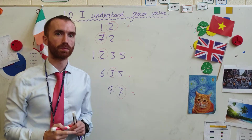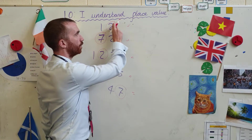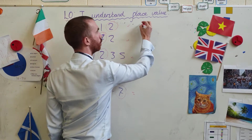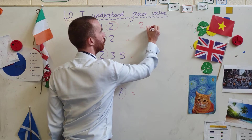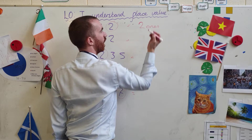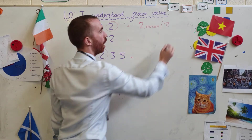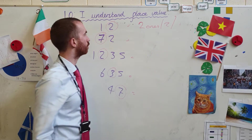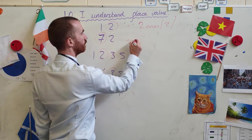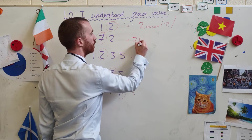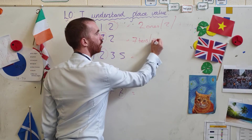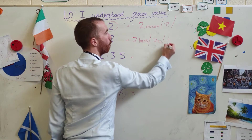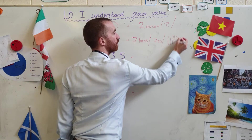Right, now you're back. The value of the circled number there is simply 2, or 2 ones. So I could say 2 ones, I could just say 2, or I could draw it like this — 2 dots. The value of that is 7 tens, or 70, or I could draw it like this: 1, 2, 3, 4, 5, 6, 7.